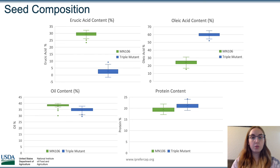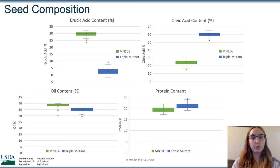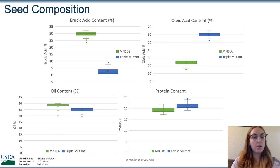We also measured various seed composition levels. For erucic acid, you can see that the triple mutant has significantly lower levels, which is desirable for domestication. And in the next graph, you can see that the triple mutant had significantly higher percentages of oleic acid, which is also one of the traits that we were looking for.